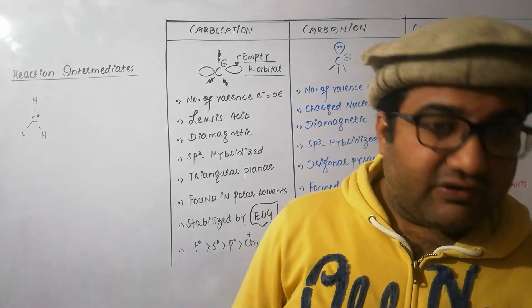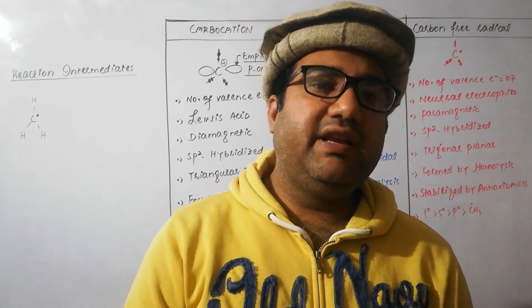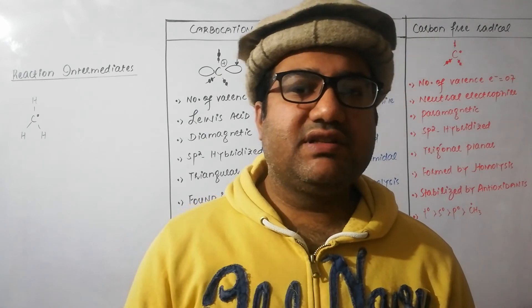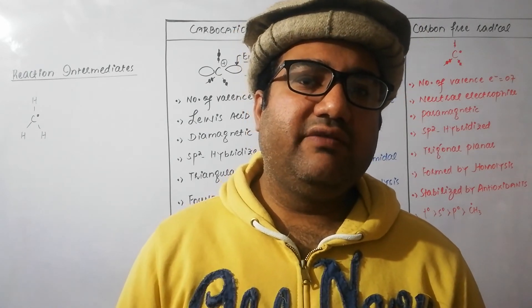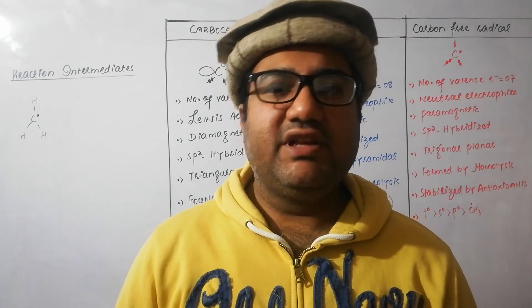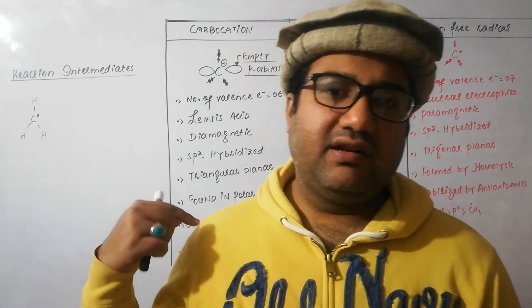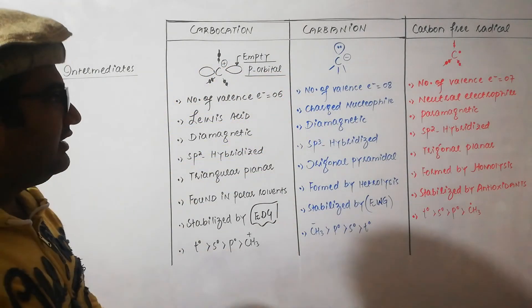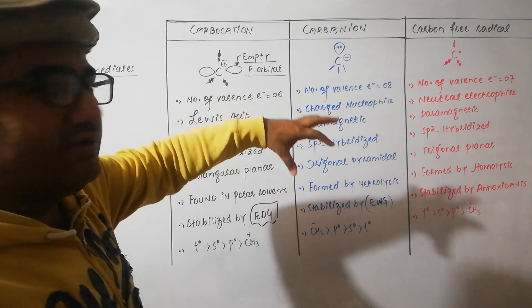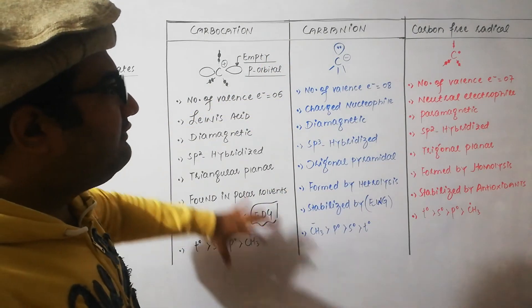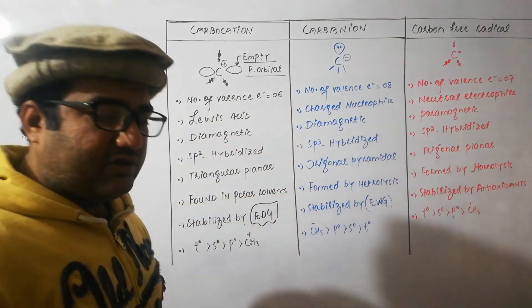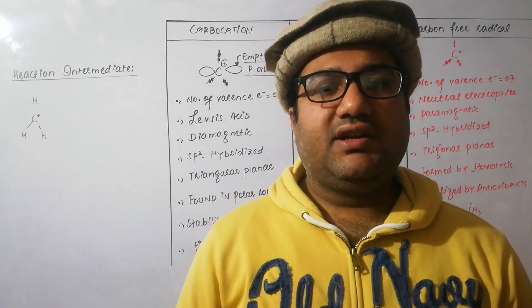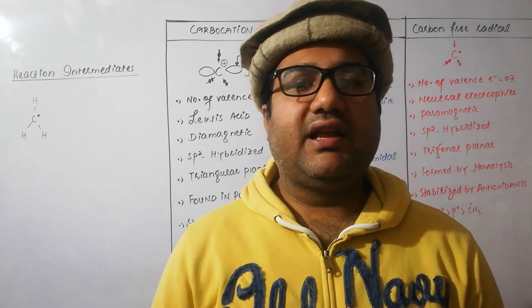For discussion or understanding of the stability of carbocations and carbanions, please watch the lecture on the inductive effect. To understand types of bond cleavage, you must watch that lecture too. Both lectures are available in the playlist on basic organic chemistry. This was a comparison of the carbocation, carbanion, and carbon free radical. Every point is also an MCQ, so multiple choice questions can be solved if you have an idea of these three. This was all about the types of reaction intermediates. In the next lecture, we will cover the types of reagents.